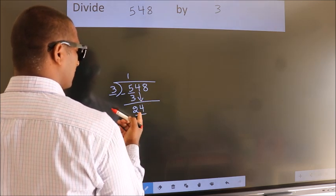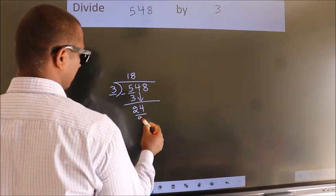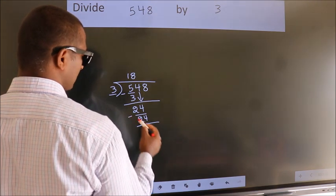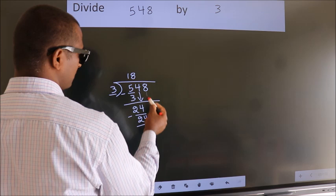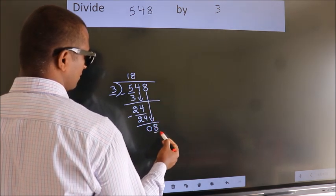When do we get 24? In the 3 table, 3 eights 24. Now we subtract. We get 0. After this, bring down the beside number. 8 down, so 8.